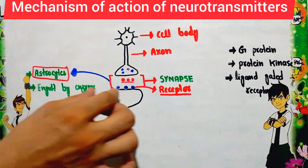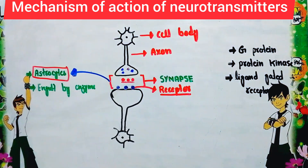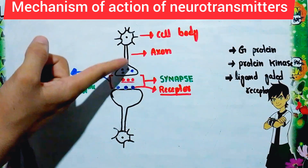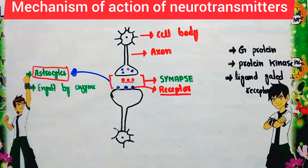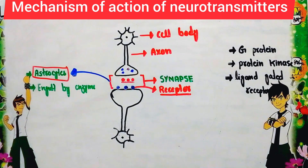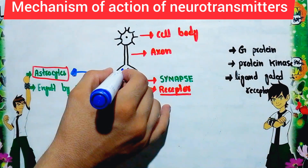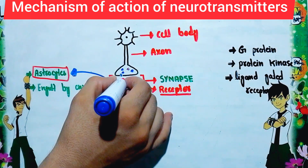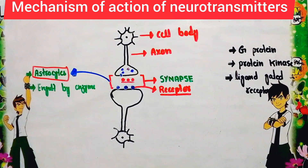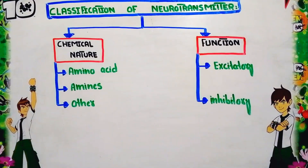After performing its action, the neurotransmitter may be engulfed by astrocytes — a type of glial cell — or it may be degraded by specific enzymes. For reuptake, a special carrier protein present in the membrane of the axon terminal re-uptakes the neurotransmitter back into the axon terminal.